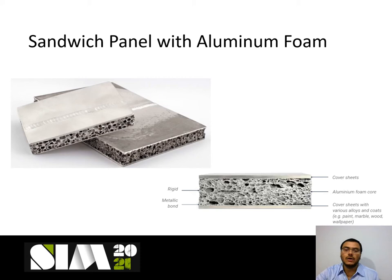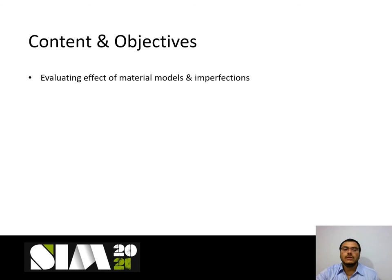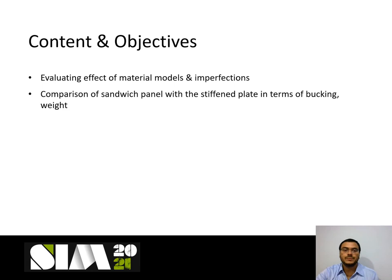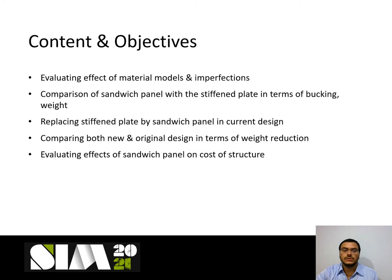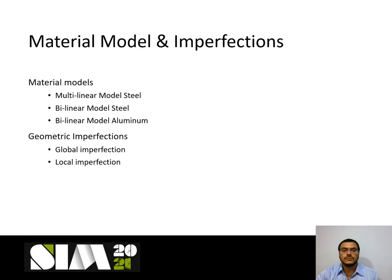The objectives of this study are: evaluating the effect of material models and imperfections on load-carrying capacity of sandwich panels; comparison between sandwich panel and stiffened plate in terms of buckling and weight; replacing the stiffened plate with a sandwich panel in the current design; and comparing both old and new designs in terms of weight reduction, evaluating the effects on cost, and finally presenting conclusions.